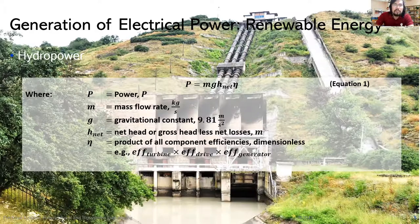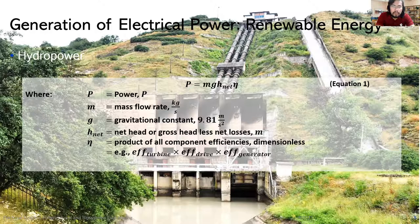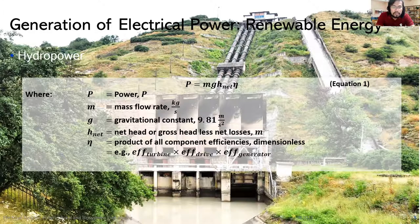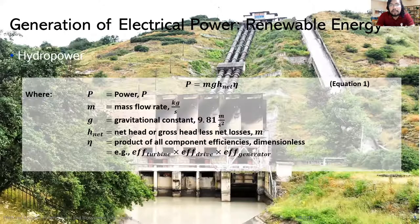As to the power available in hydropower plants, equation one is used to quantify the amount of power or electricity available. We have P = m·g·h_net × η, where m is the mass flow rate in kilograms per second. Potential energy is a function of gravity; the more mass or volume of water, the more energy available. The height is the difference between water level and the level of power generation, so the higher the head, the higher the generating capacity.